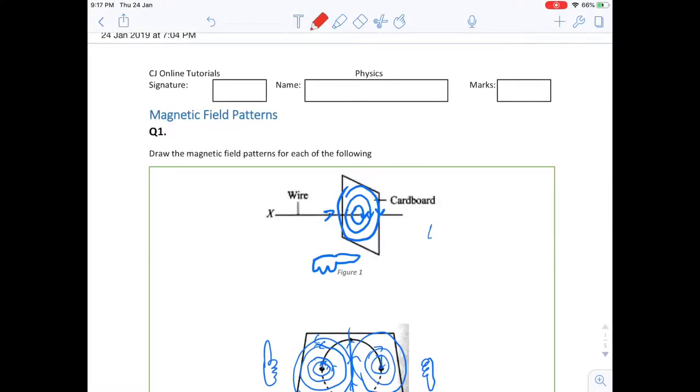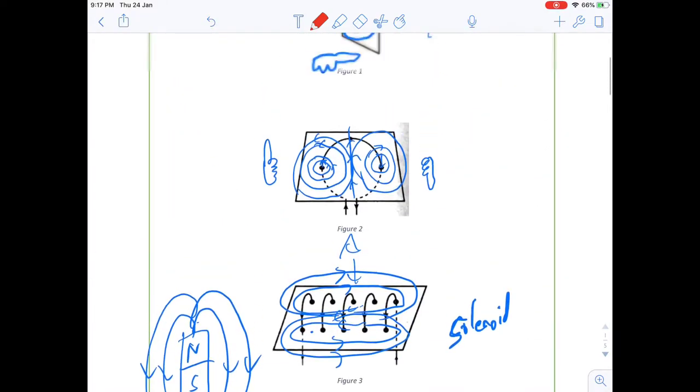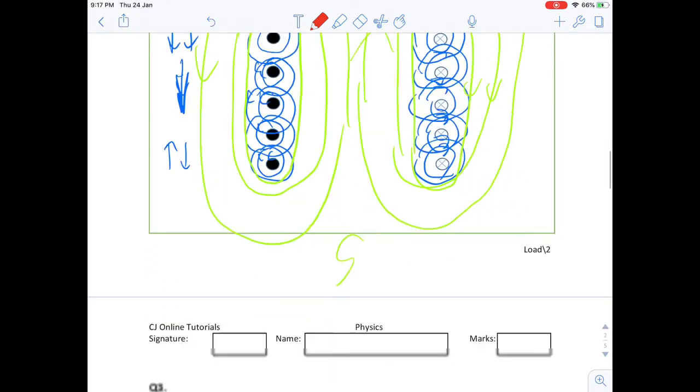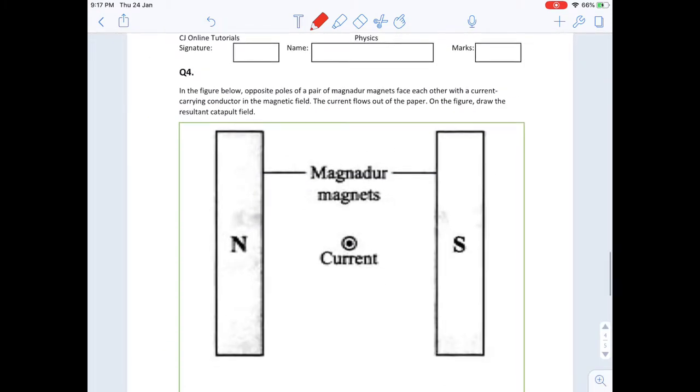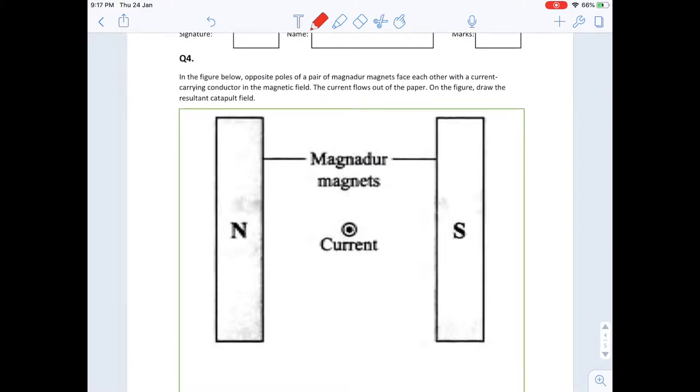Let's take a look at a special type of magnetic field called a catapult field. Same worksheet, scroll to question number four. Here we have two permanent magnets.